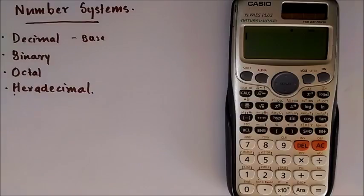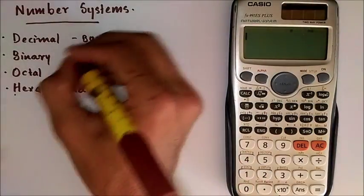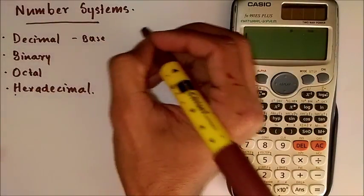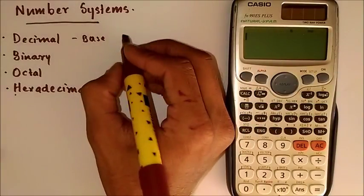Now there are four basic number systems: the decimal, binary, octal and hexadecimal, and the base of each is different.